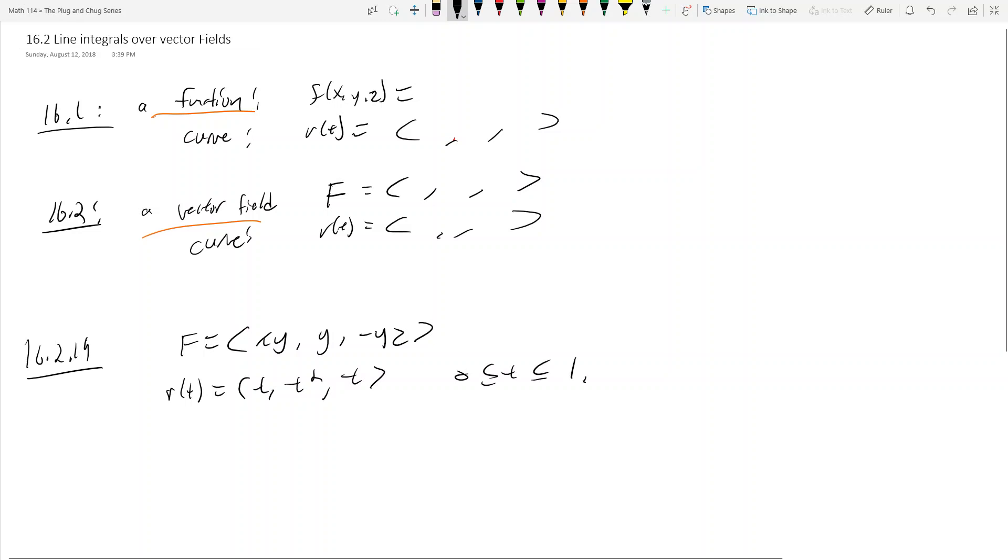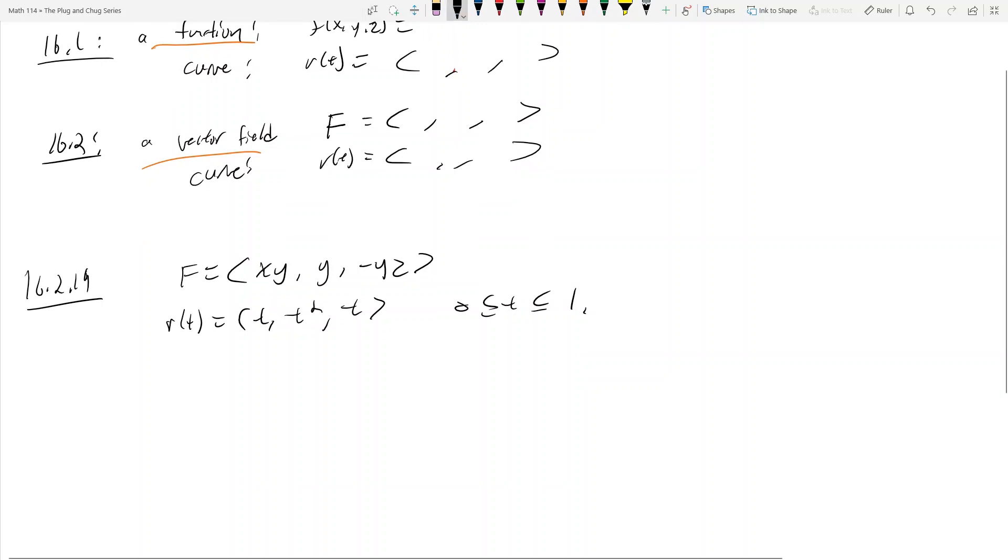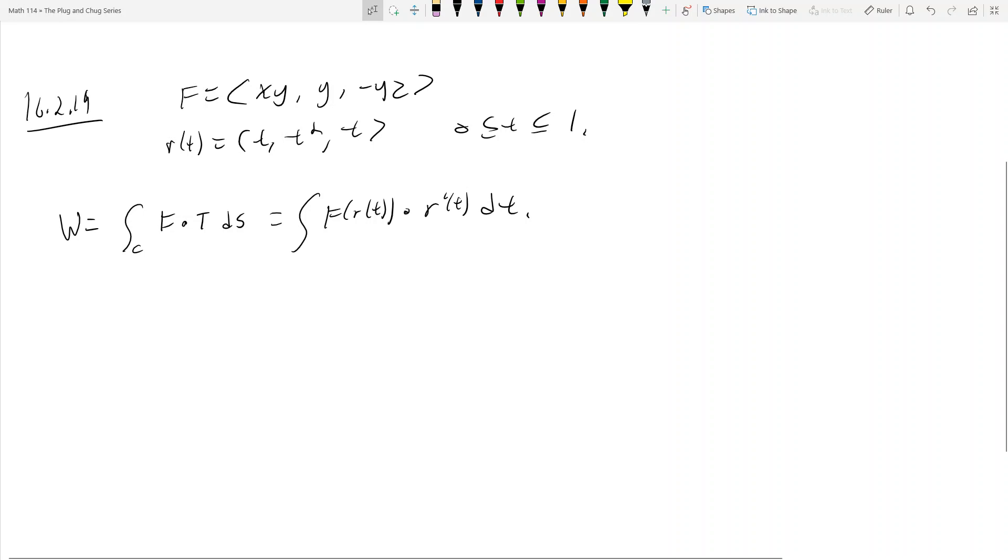So how do we calculate these guys? Well, the way we calculate 16.2 line integrals is the following. By definition, the amount of work done by this vector field over the line is going to be the integral over the curve of F dot T ds. But the way we've evaluated then is we evaluate it as F of r of t dotted with r prime of t dt.